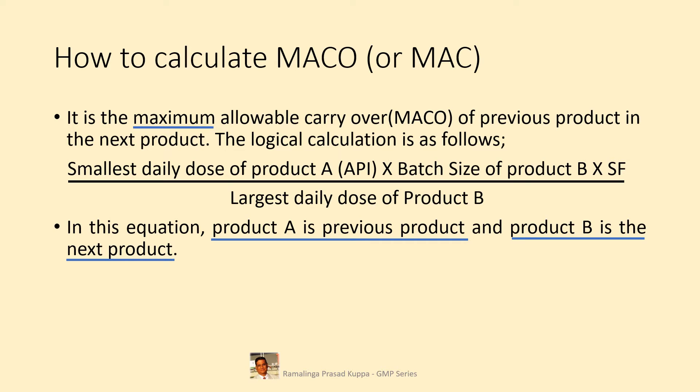Smaller numbers in the numerator and larger numbers in the denominator give low MACO values. For example, a dose of 300 mg per day administered in three doses of product A equals 100 mg per each dose — that is the smallest dose. The largest daily dose of product B may be considered as 500 milligrams. So 100 divided by 500, which is 0.2%, is a smaller factor compared to 300 divided by 500, which is 0.6%. SF is the safety factor.